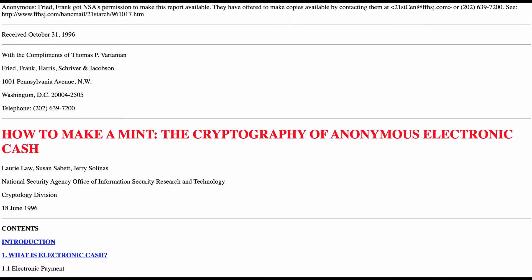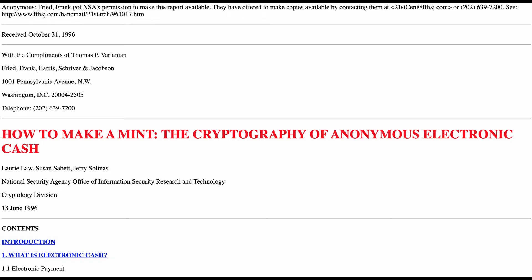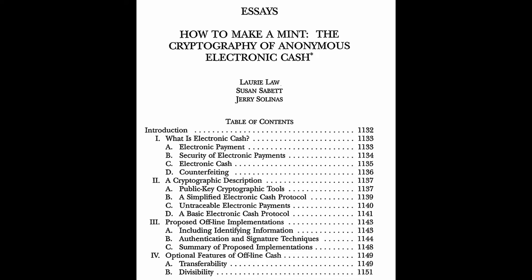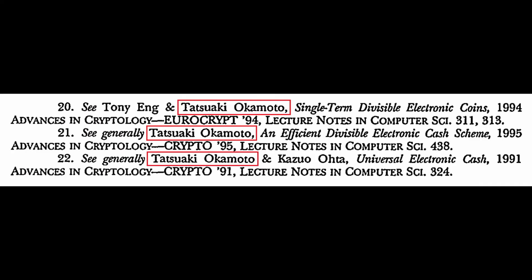In 1996, the NSA's cryptology division of their Office of Informational Security Research and Technology published a paper titled "How To Make A Mint: The Cryptography Of Anonymous Electronic Cash," first publishing it in an MIT mailing list, and later in 1997 in the American University Law Review. One of the researchers they reference was Tatsuaki Okamoto.